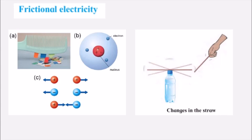Next is frictional electricity. The electric charge which is generated by friction is called frictional electricity, and this charge is produced only at the place of friction. For example, if you take a hair comb and rub it against your hair, there is a force of friction and charges are generated. This is called static electricity, and when you take that comb near small tiny pieces of paper, the tiny papers come and attach to it.